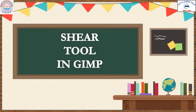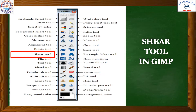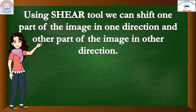Hello all, let us study about the shear tool in GIMP. This is the shear tool. Let us learn the definition of the shear tool. Using the shear tool, we can shift one part of an image in one direction and the other part of an image in another direction. We can change the x and y magnitude of the image.